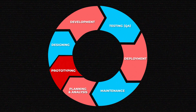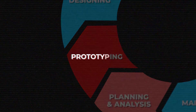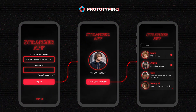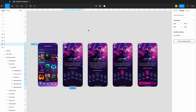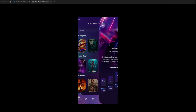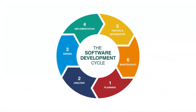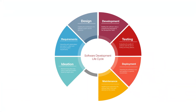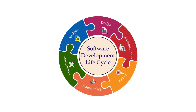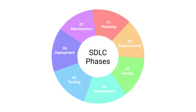Sometimes there's a prototyping stage between planning and designing. A prototype is a simplified version of the product used to validate the idea before any major work begins — it doesn't even have to be coded. The design can be used to receive feedback from stakeholders and users. A prototype is the best way to verify requirements with minimal effort and costs.